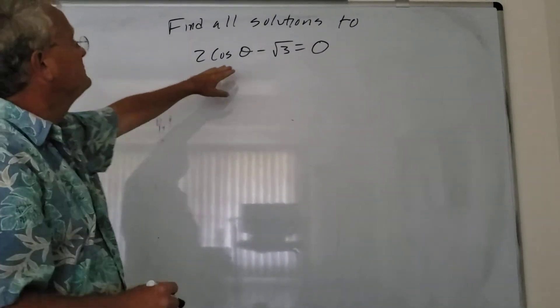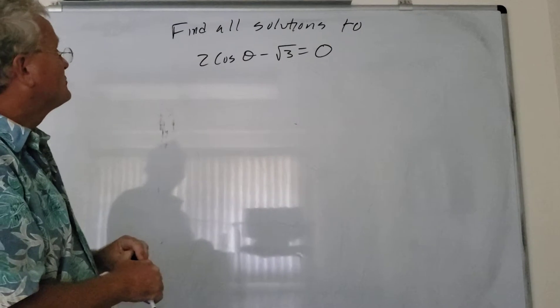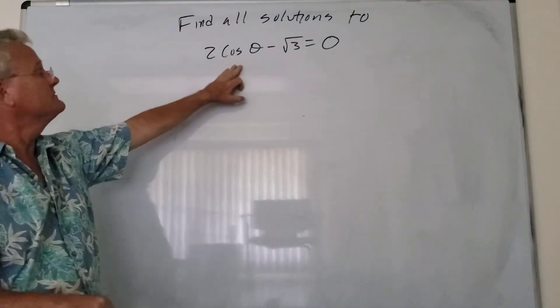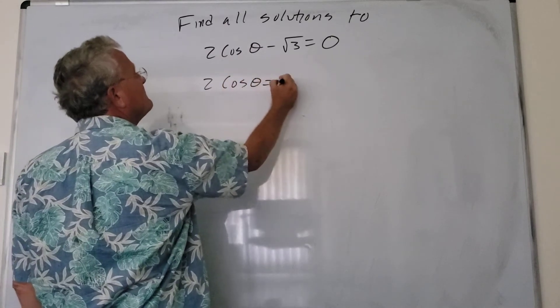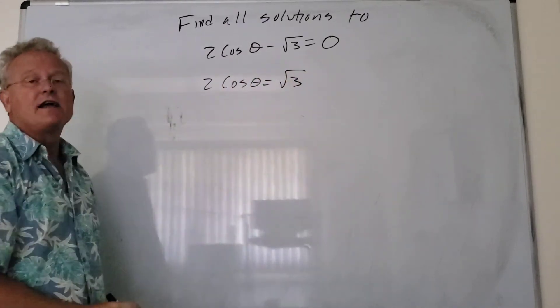Alright, so we're going to find all the solutions to this trig equation. We want to isolate the trig function. So we add root 3 to both sides, get this, divide by 2